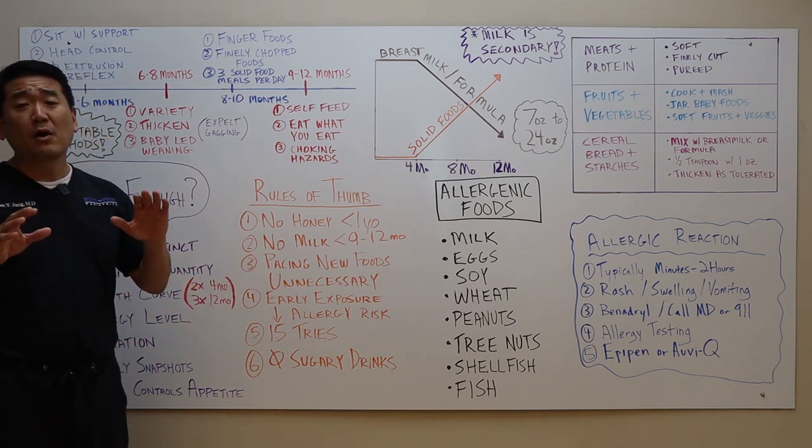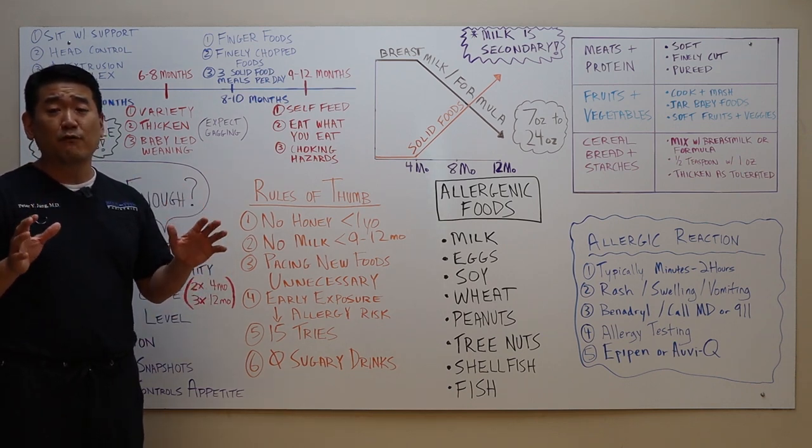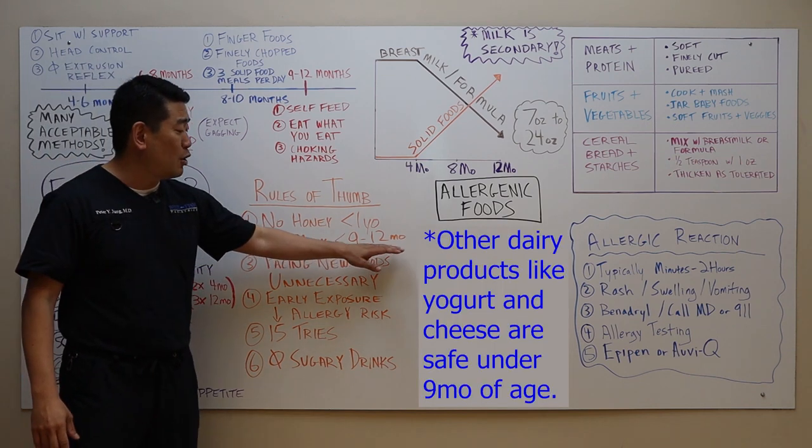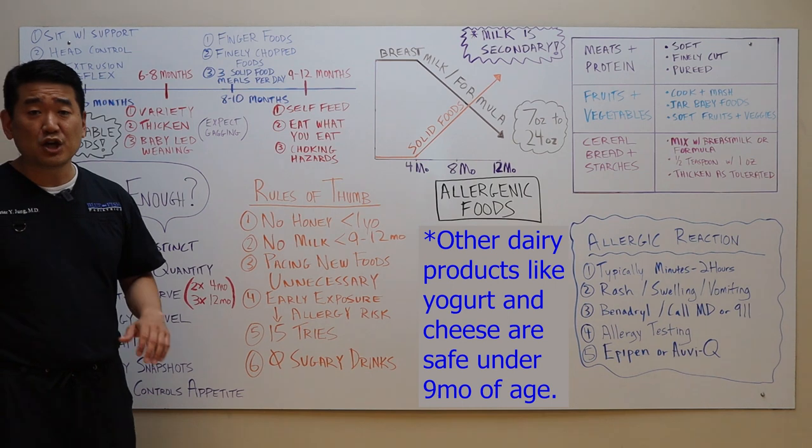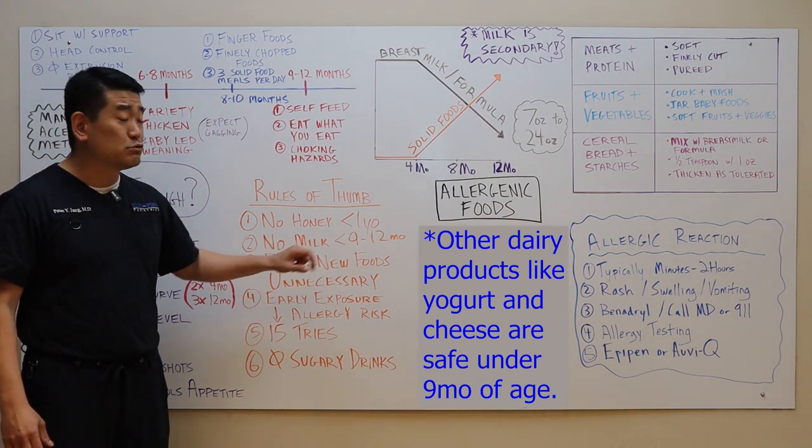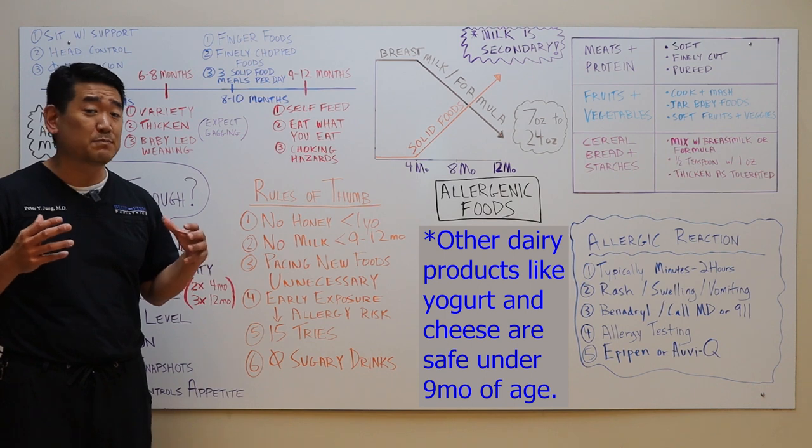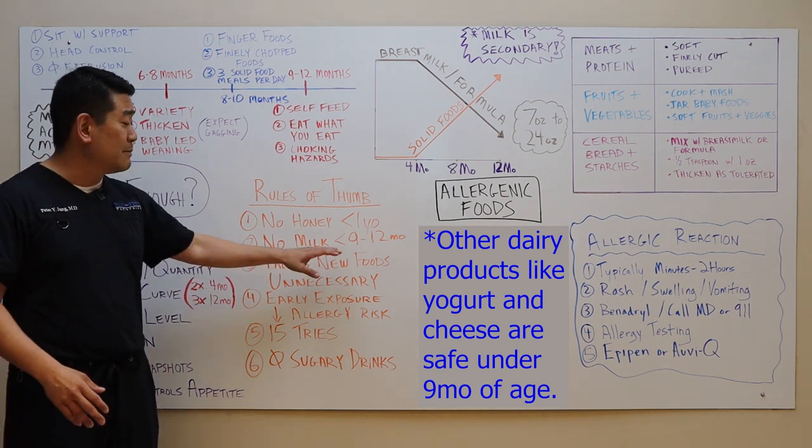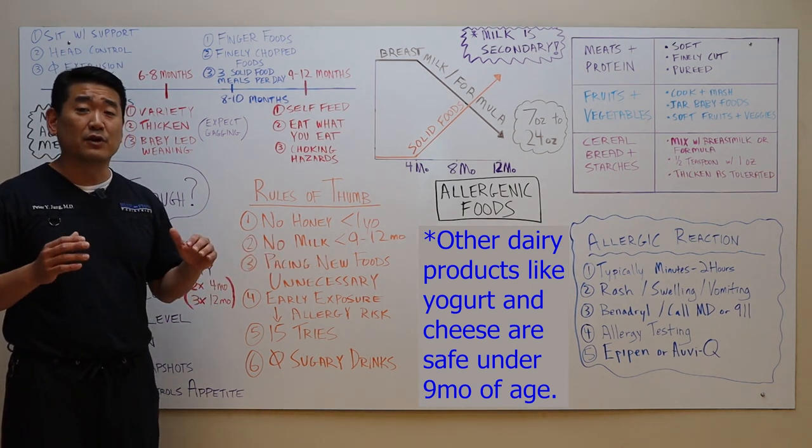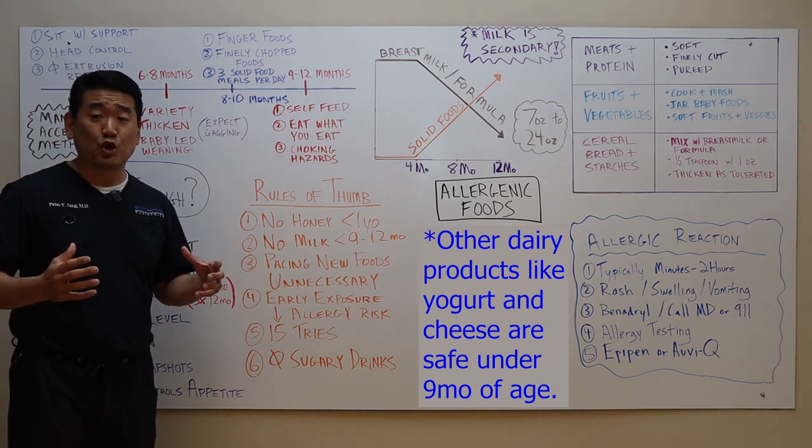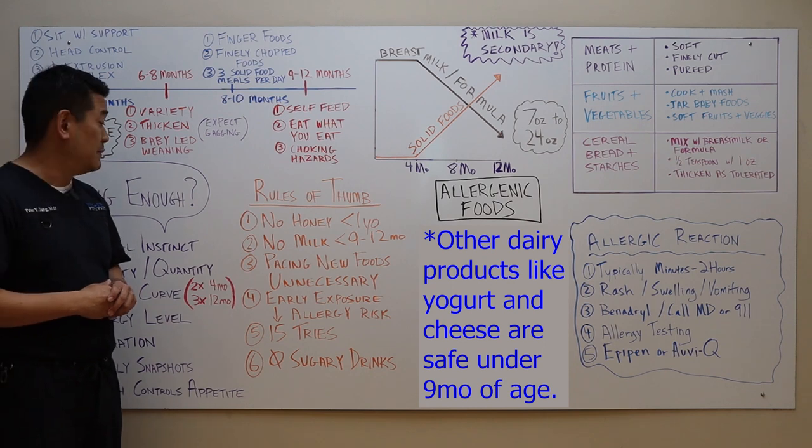Number two, you don't want to give any milk besides breast milk and formula under nine months of age. Typically, America switches to whole milk at one year of age. But there are countries such as Canada and Sweden, which switch to whole milk at nine months of age, which I think is perfectly acceptable. But under nine months of age, any kind of milk given should be either formula or breast milk because the baby's GI tract is not mature and ready for the other types of milk.